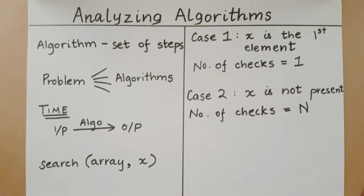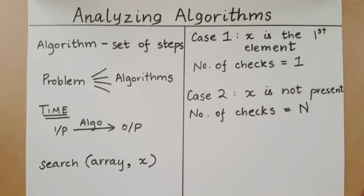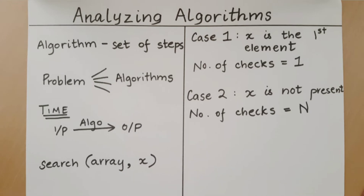Case 1 here is the best case and case 2 is the worst case. As you can see, the number of checks in the worst case is much larger than the number of checks in the best case.